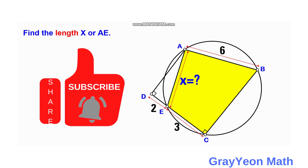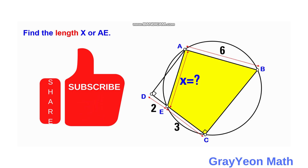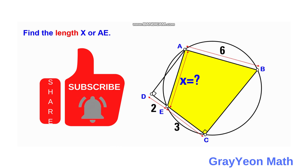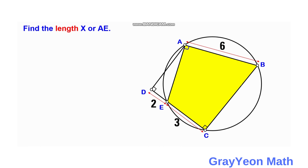Welcome to Grayon Map. We are asked to solve this problem. We have a trapezoid A, B, C, D, and a line is drawn from point A to the intersection of this trapezoid and circle segment at C. We form a line X that is also AE. The length of DE is 2 and CE is 3 and AB is 6. We are required to find the length of X or AE.